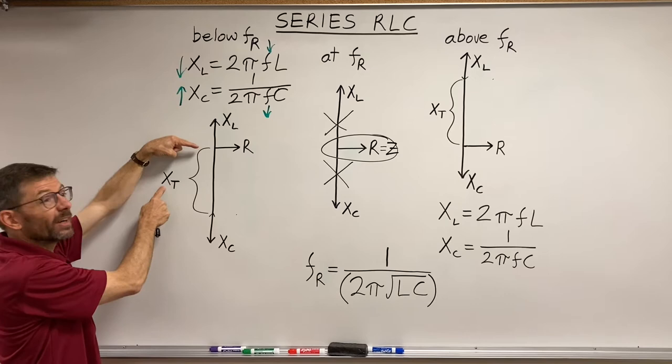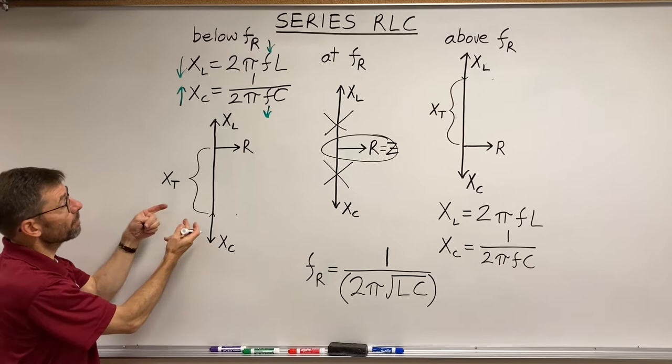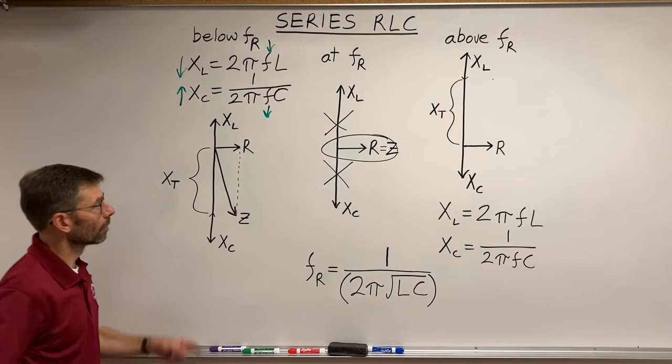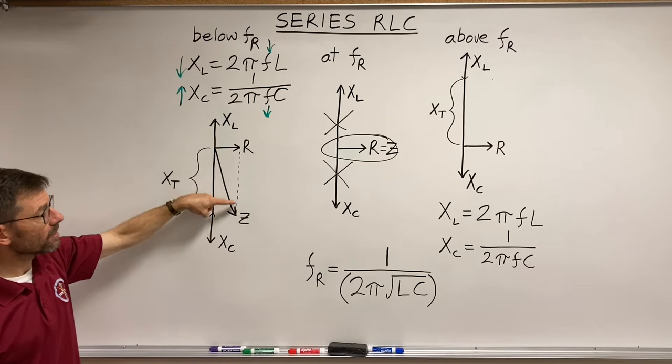So I've got to do a vector sum of those two. So I take my reactance and put it here and measure a Z. And that's my Z, the vector sum of the resistance in the circuit and the net reactance, the part that wasn't canceled out.